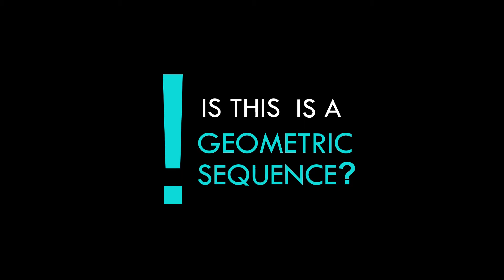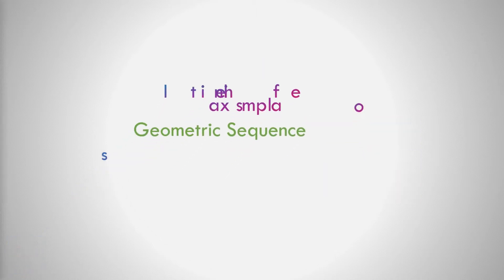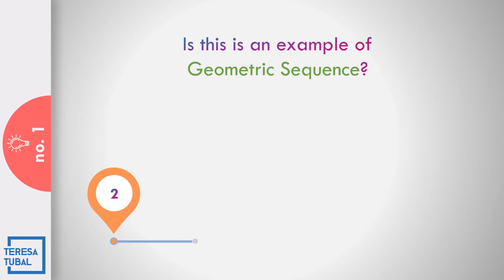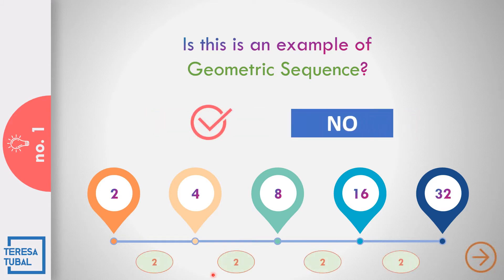Is this a geometric sequence? Do you think this is an example of the geometric sequence 2, 4, 8, 16, and 32? Yes or no? Correct! The answer is yes because the common ratio is equal to 2. If we try the second term divided by the first term, 4 divided by 2, the answer is equal to 2. So the common ratio from first up to the last term is equal to 2.